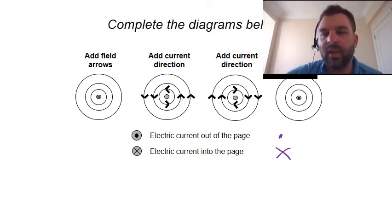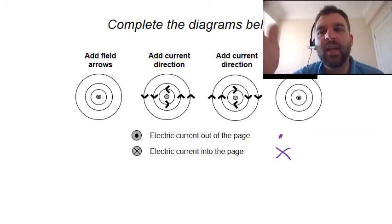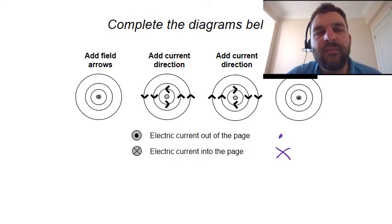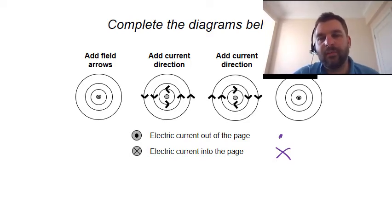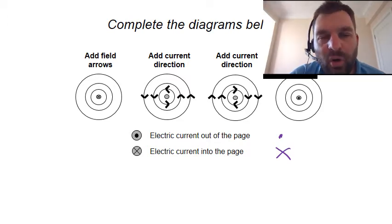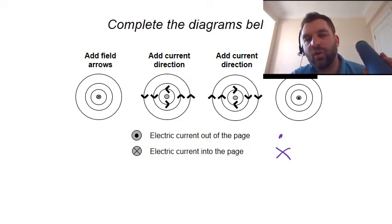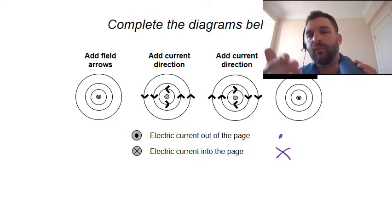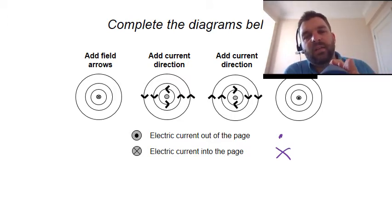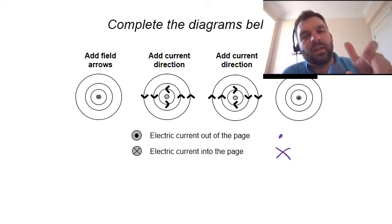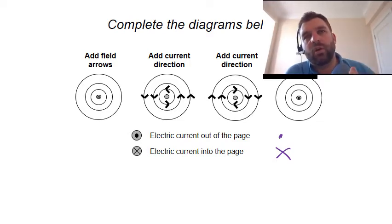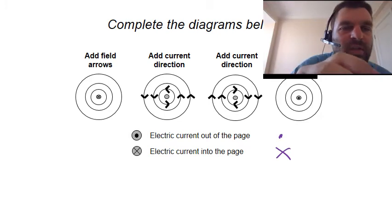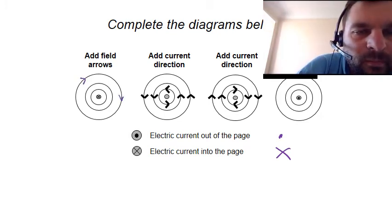Welcome back. Using the prop — our right hand — we work out the field arrows and direction of the magnetic field around this wire. It's a cross, so the current is going into the page, away from you. We have our right hand, the thumb points in the direction of the current — going away from you — which means the magnetic field must be moving clockwise. That's the direction of your fingers.